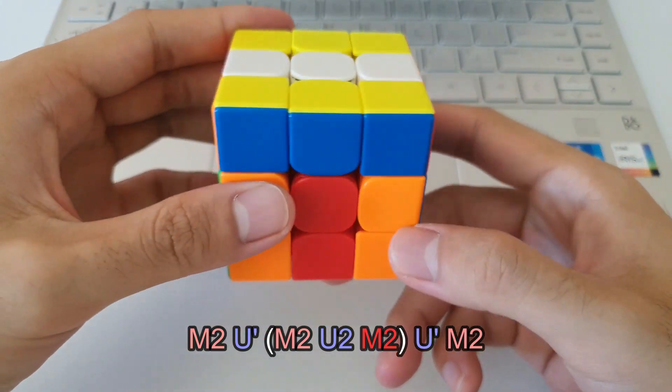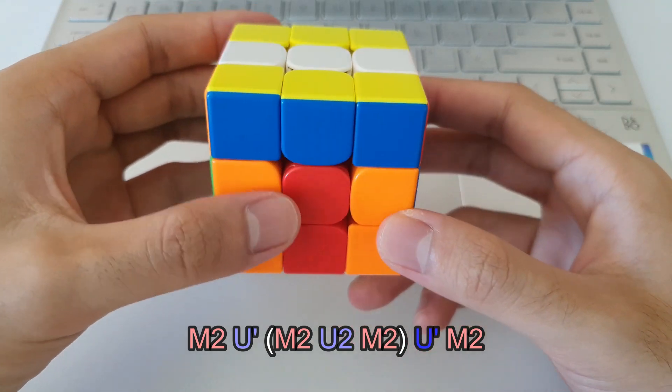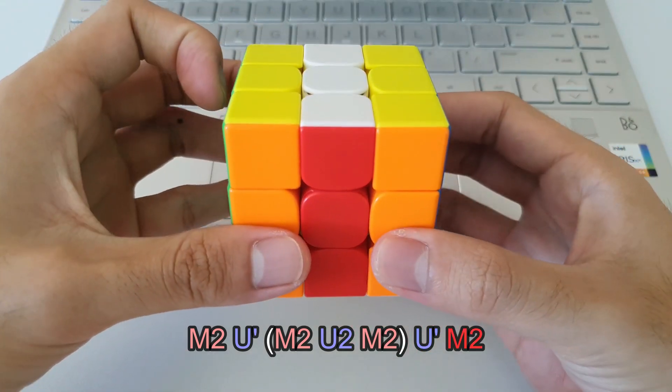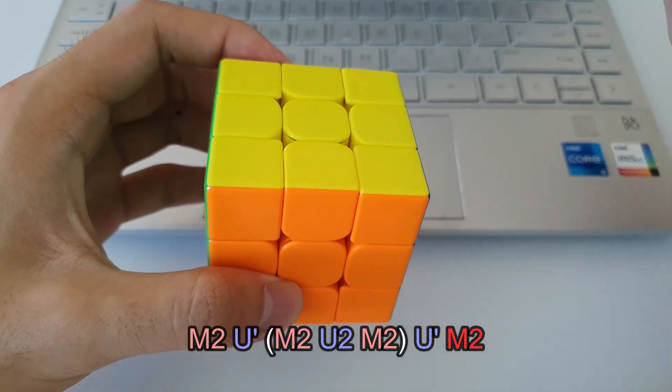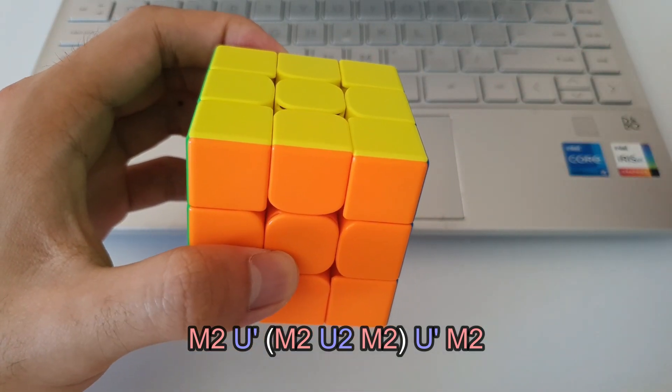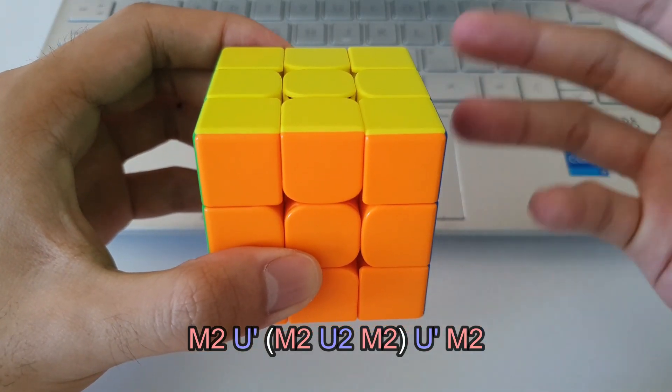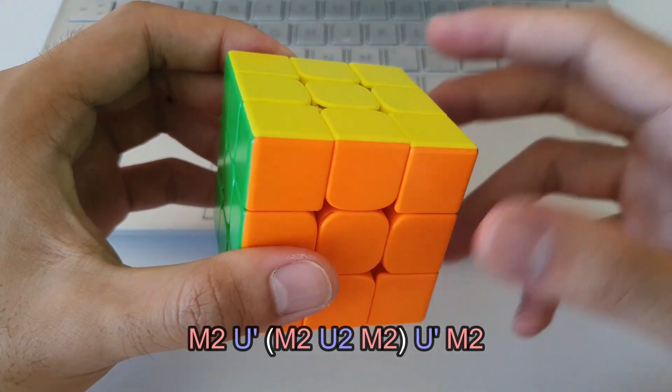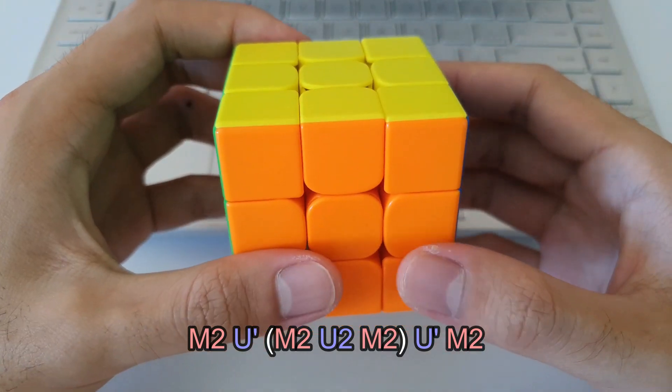And then finally, I mean at this stage you can sort of maybe just match up the colors, but it's another U prime followed by the M2. So it's very straightforward. It's M2s alternating with a type of U move. Over time it will pretty quickly become muscle memory and you should be able to do it quite quickly as well.